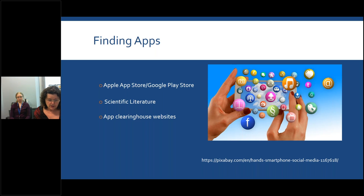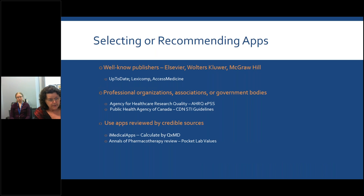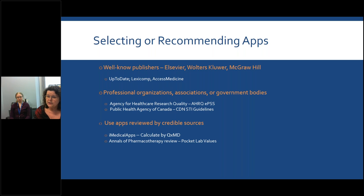Various organizations are organizing and reviewing apps — basically assessing the usability, functionality, and accuracy of the content. If you're going to be selecting or recommending an app, your best bet is to stick with well-known publishers such as Elsevier, Wolters Kluwer, or McGraw-Hill, or look to professional organizations, associations, or government bodies such as the AHRQ, Public Health Agency of Canada, or the CDC. You can also use credible sources such as the app clearinghouse iMedical Apps, or use journal reviews to find various apps.